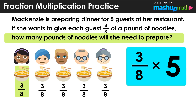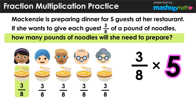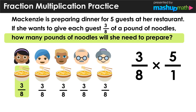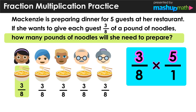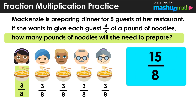Now that we have modeled this word problem, we can find the answer to how many pounds of noodles she will need to prepare in total. We have the fraction three over eight being multiplied by five, a whole number. We're going to change five to a fraction by rewriting it as five over one, which means the same thing. When multiplying fractions, we multiply the numerators — three times five, which is 15 — and we also multiply the denominators — eight times one, which is just eight. Our product is 15 over eight.